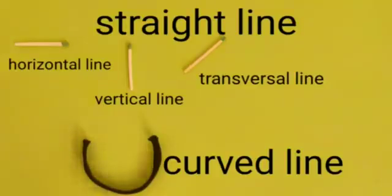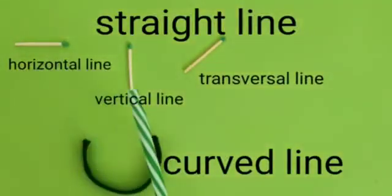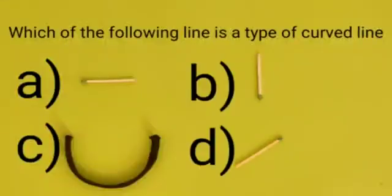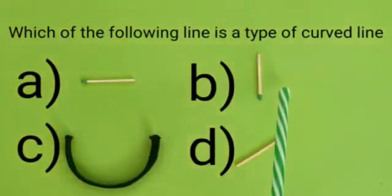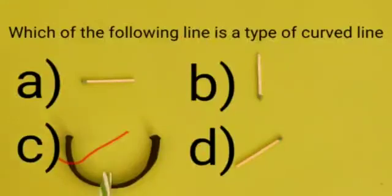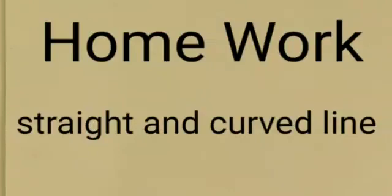Dear students, today we have learnt about straight and curved lines. In straight lines, we have learnt about horizontal line, vertical line, and transversal lines. Now we will solve a sum: which of the following is a type of curved line? We have four options — A: horizontal line, B: vertical line, C: curved line, D: transversal line. Option C is correct because it is a type of curved line, so we put a tick on it. Now you will draw straight and curved lines on your notebooks at home.